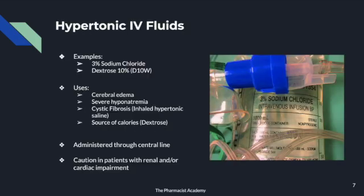Now let's look at the clinical significance. Hypertonic IV fluids — for example, 3% sodium chloride — are commonly used in hospitals to treat patients with cerebral edema. There is a lot of water in the brain cells, so we give a hypertonic solution that makes the surrounding bloodstream very concentrated, causing water in the cells to leave and enter the bloodstream. It can also be given for severe hyponatremia. For cystic fibrosis, inhaled hypertonic saline makes the airways concentrated, causing water to shift into the airways to help break down mucus.